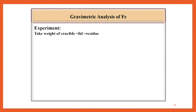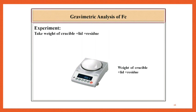Then cool this silica crucible well and weigh it again with the residue. This is the weight of crucible plus lid plus residue and record this reading as W2 gram.